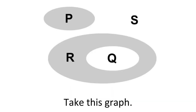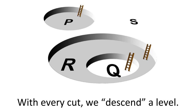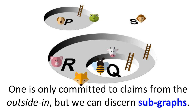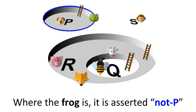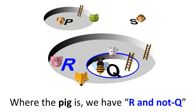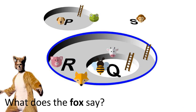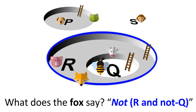Take this graph. With every cut, we descend a level. One is only committed to claims from the outside-in, but we can discern subgraphs. Where the dog is, it is asserted that p. Where the frog is, it is asserted that not p. Where the pig is, we have r and not q. What does the fox say? Not r and not q.